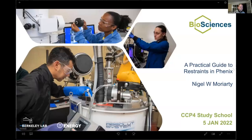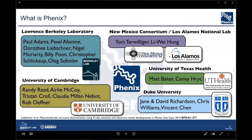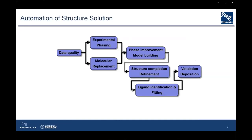This is a practical guide to restraints, and in particular eLBOW and Phoenix. Phoenix is many things — you can read all about it in the 2019 paper. Foremost, it's a package for solving macromolecular structures in x-ray crystallography, neutron diffraction, and cryo-EM. A major goal of Phoenix is to automate structure solution, from data quality to deposition, and different parts of the process require restraints.